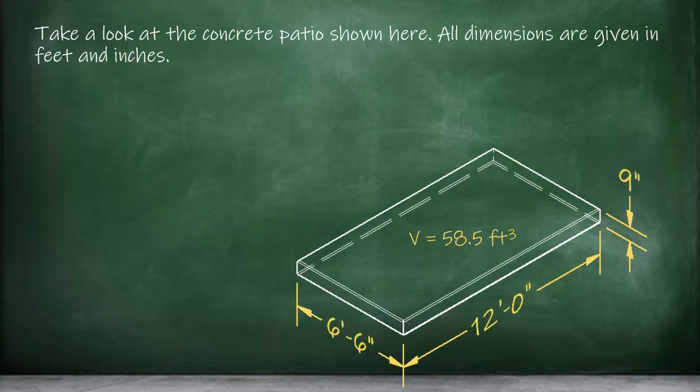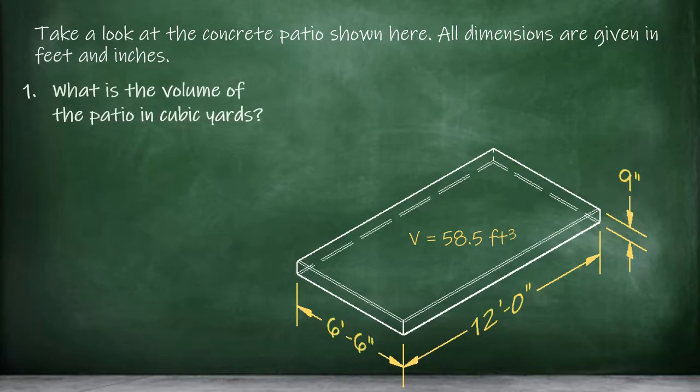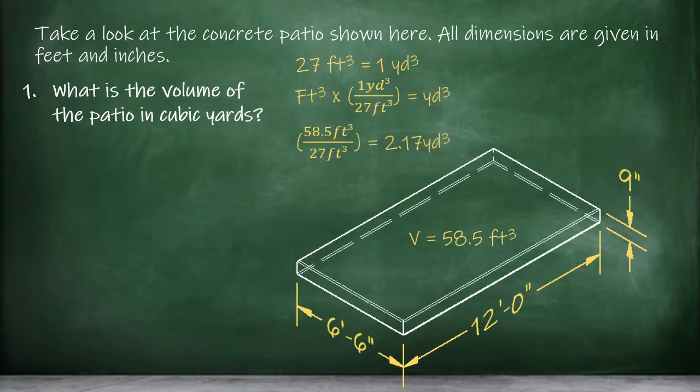Concrete delivered by truck is sold by the cubic yard, not the cubic foot. So before we can figure out the cost of the delivery, we would need to figure out the volume of concrete needed in cubic yards. There are 27 cubic feet in a cubic yard. So to convert our cubic feet into cubic yards, we divide by 27. 58.5 cubic feet divided by 27 equals 2.17 cubic yards of concrete. But remember that we need to round our answer up to the nearest cubic yard, because we can't order a portion of a cubic yard to be delivered this way. We'd need to pay for three.